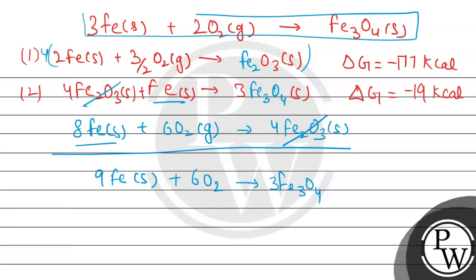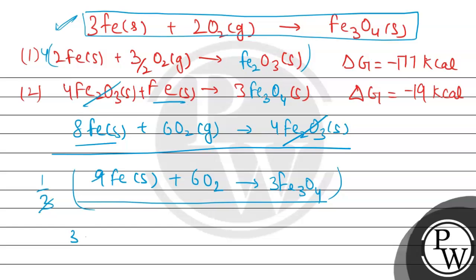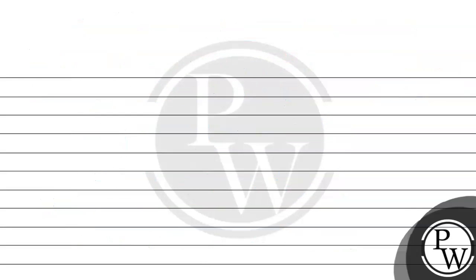This is the final combined reaction. The required reaction is this one, and we can see the reaction we have written is 3 times the required reaction. So we will multiply by 1/3 to get the desired reaction. Dividing: 9 iron divided by 3 gives 3 iron solid, plus 6 O₂ divided by 3 gives 2 O₂, leading to formation of Fe₃O₄ solid. So basically, the second reaction was added and the first reaction was multiplied by 4, then the overall result was multiplied by 1/3.